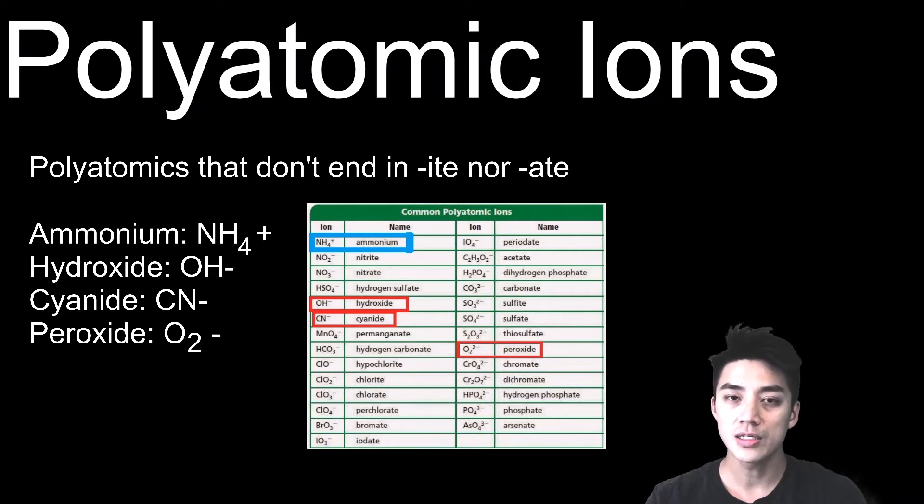The other 3 polyatomic ions all have negative charges: cyanide, which is CN-1; hydroxide, which is OH-1; and finally, peroxide, which is O2 with a 2 negative charge.